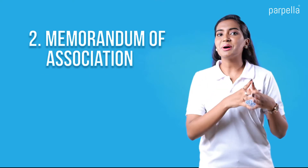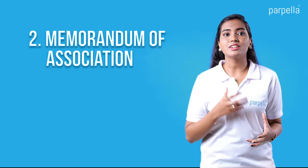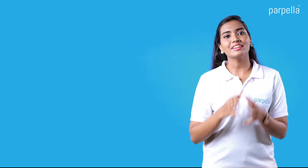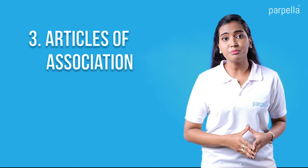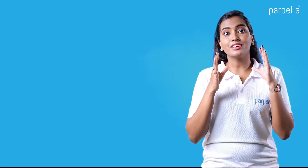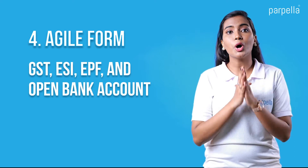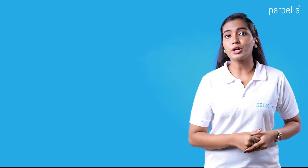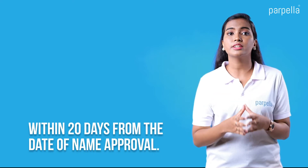The second form is the Memorandum of Association, where the business activities, objectives of your company, capital, and shareholding clauses shall be defined and documented. The third is the Articles of Association, where internal policies, procedures, and powers of your company shall be defined and documented. The last form is the AGILE form, which is used to register for GST, ESI, EPF, and to open a bank account at the time of company incorporation. These forms shall be filled and uploaded to the MCA portal within 20 days from the date of name approval.